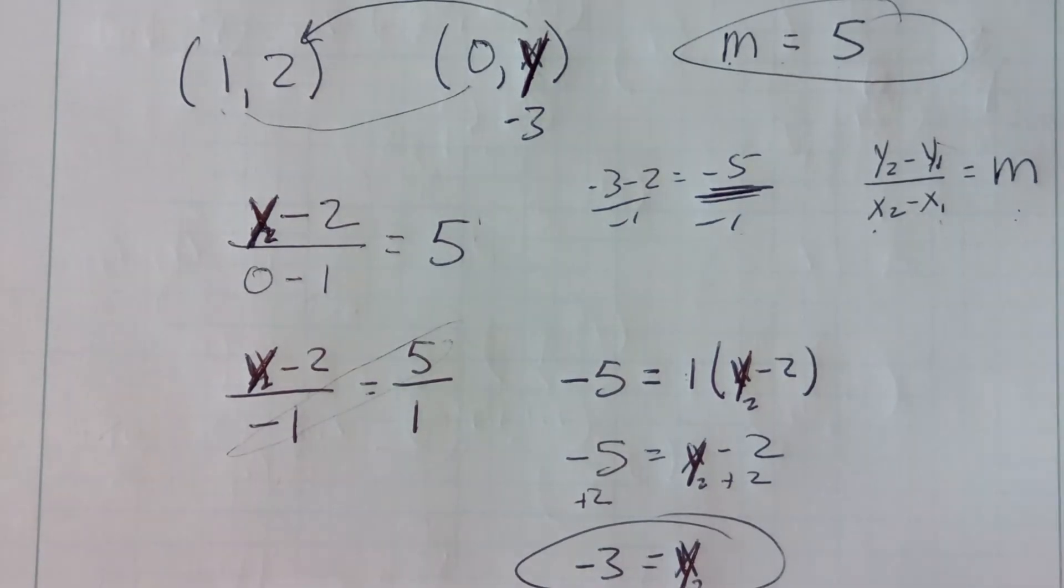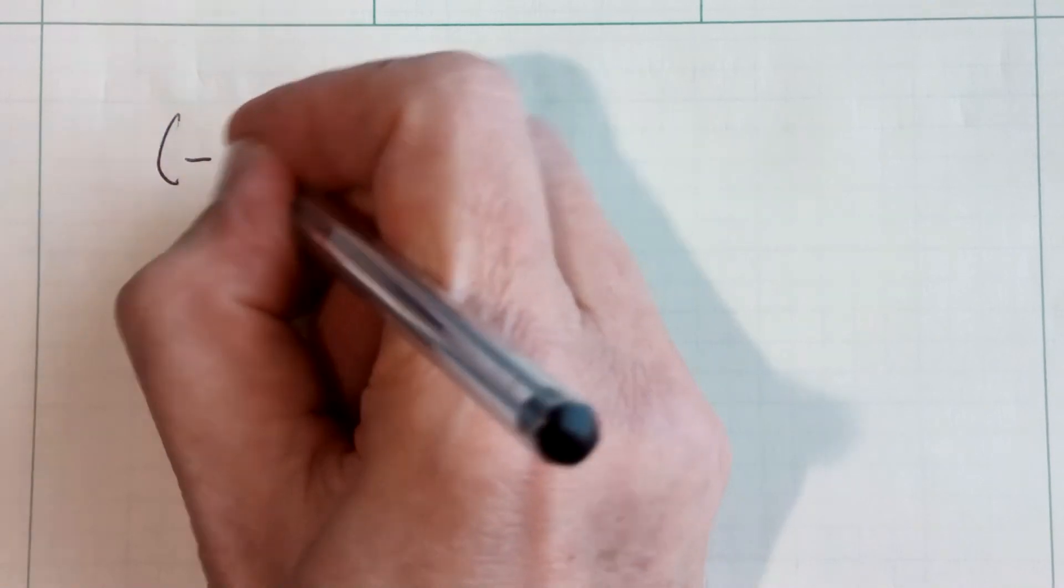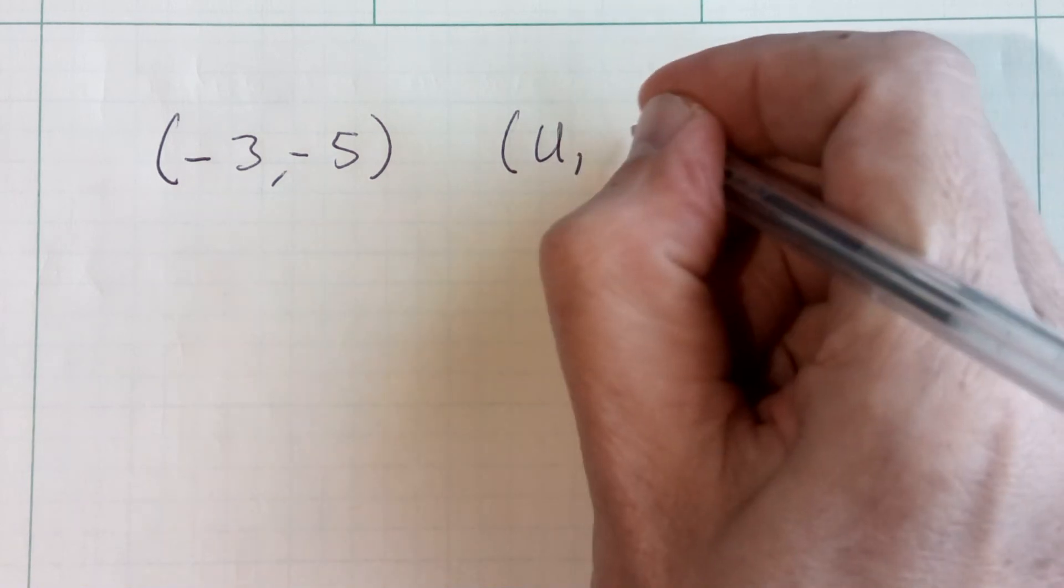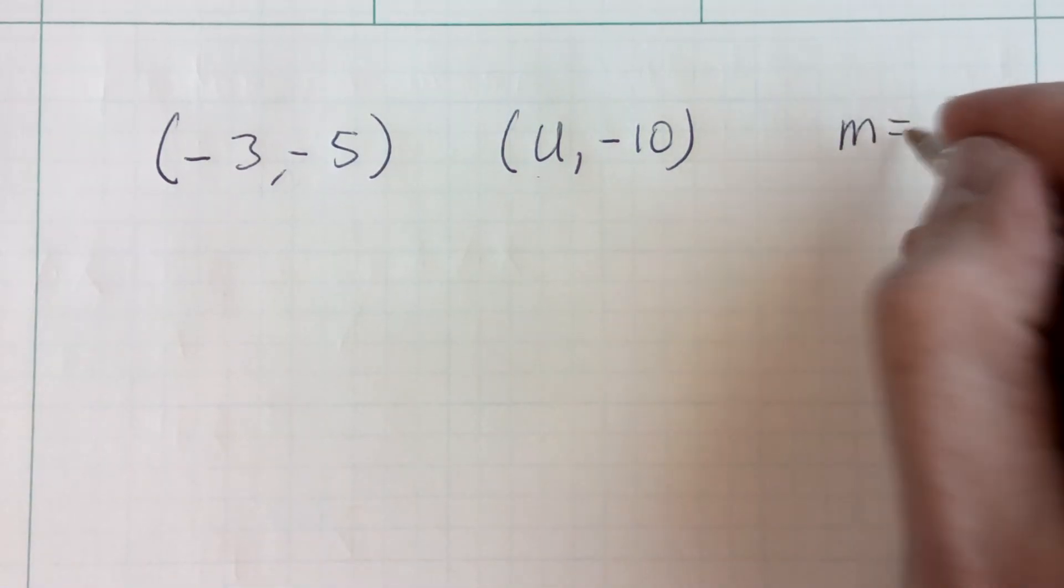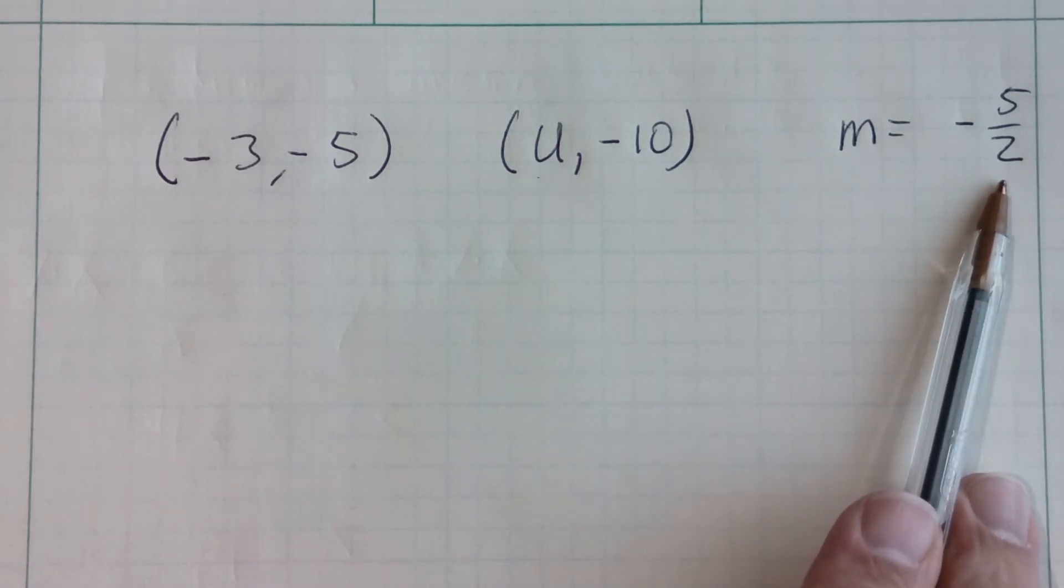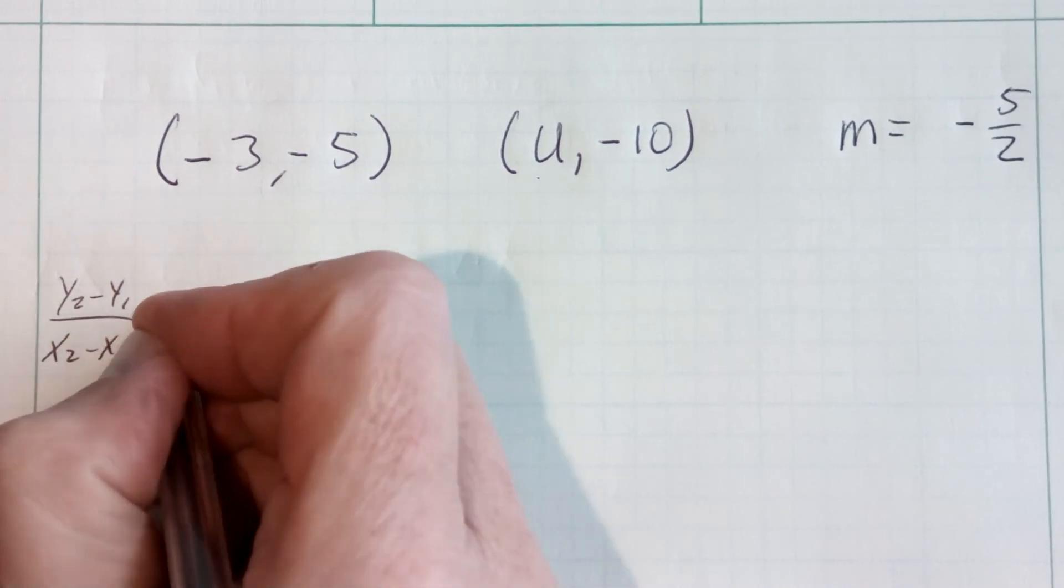Let's do another one. This time, let's make the x value an unknown. Okay? And maybe I'll use a completely different variable so we don't confuse it with x's and y's. So let's say I go through the point (-3, -5), and the point, some x value that I don't know, and -10. So I use the variable u. Let's also say my slope is negative 5 halves. Like I said, often times the slope won't be an integer. It's going to be a fraction. Well, I'm going to do my y2 minus y1 over x2 minus x1 equals my slope.